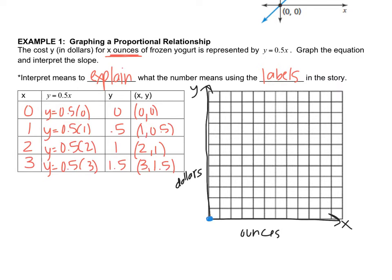Then I have 1, 0.5. Let me go by 1s on the x, and I'll skip so I can have those 0.5s a little easier to graph. I'll go 1, 0.5 will be right here. Then 2, 1 is right here. And then 3, 1.5 will be right there. So that's my line.